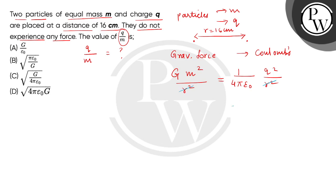And here we will get Q square divided by M square. So we will get Q equals square root of 4 pi Epsilon not G.